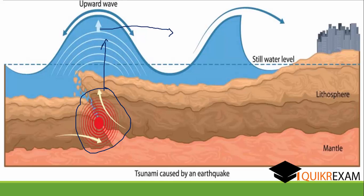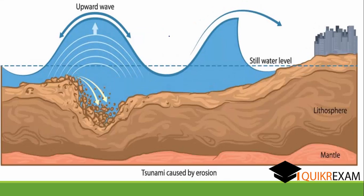When the tsunami wave is in the open ocean, it is not very powerful. But when it comes toward the harbour, due to the shallowness of the harbour, pressure increases because the area has decreased — so it results in a tsunami.